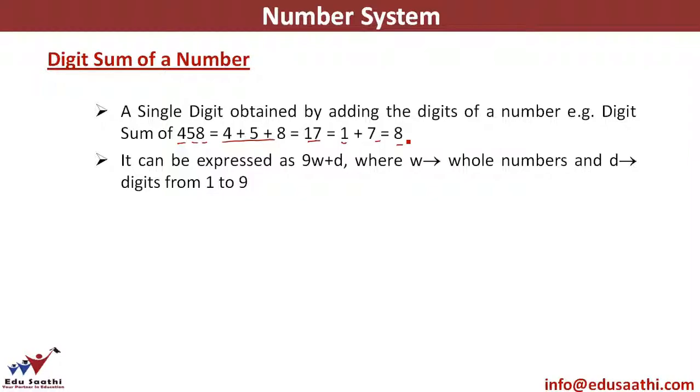So if I look at 8, when 8 is divided by 9, it is not divisible by 9, so the remainder is 8. So 9 into 0 plus 8. The value here for w comes out to be 0 and the value of this digit d comes out to be 8.